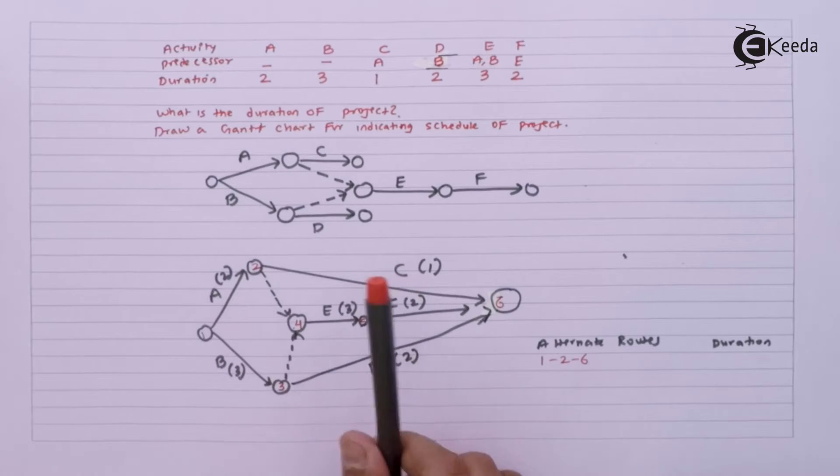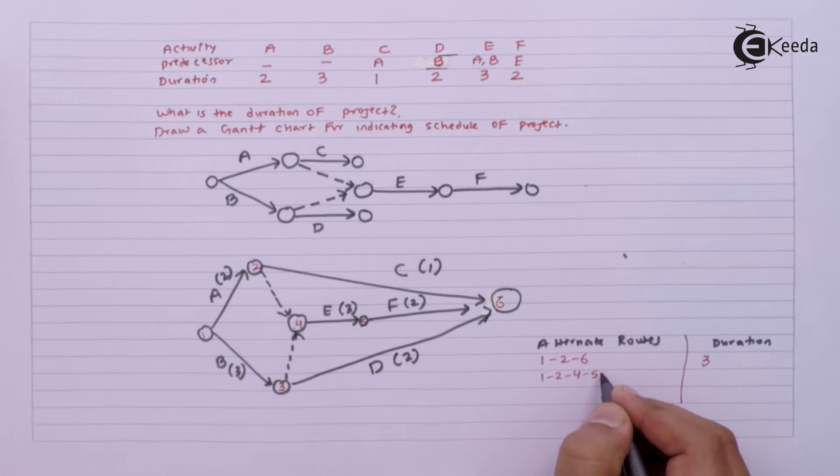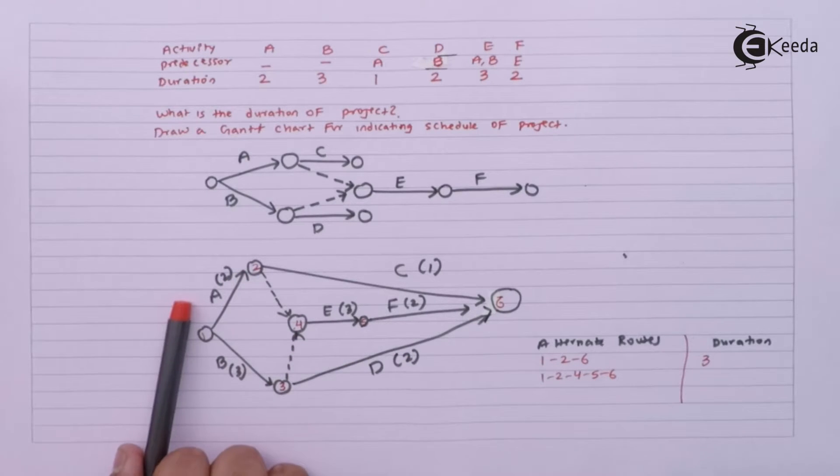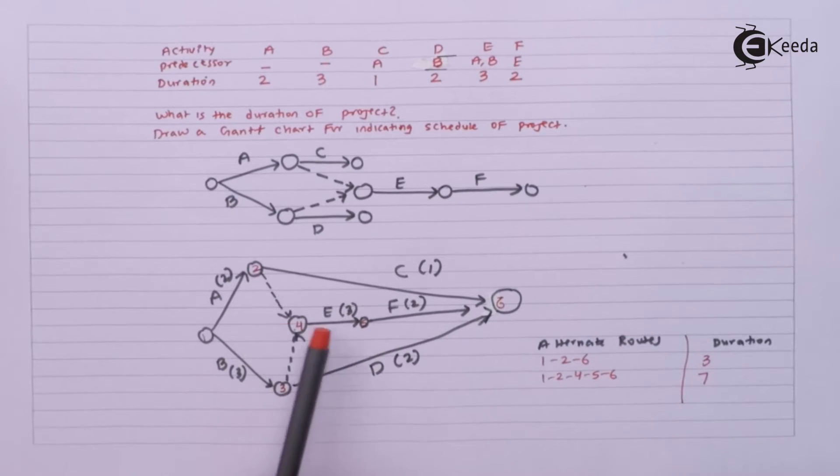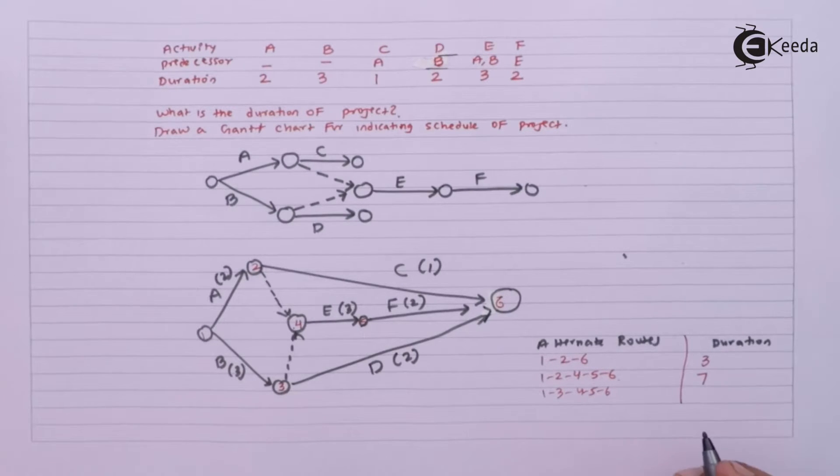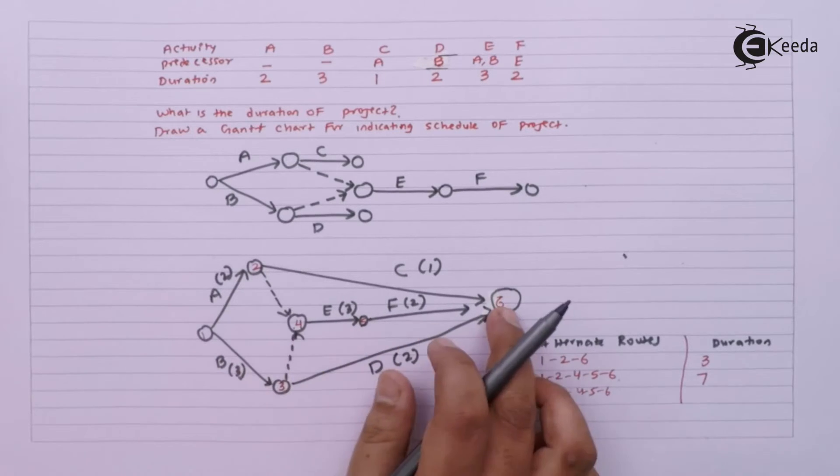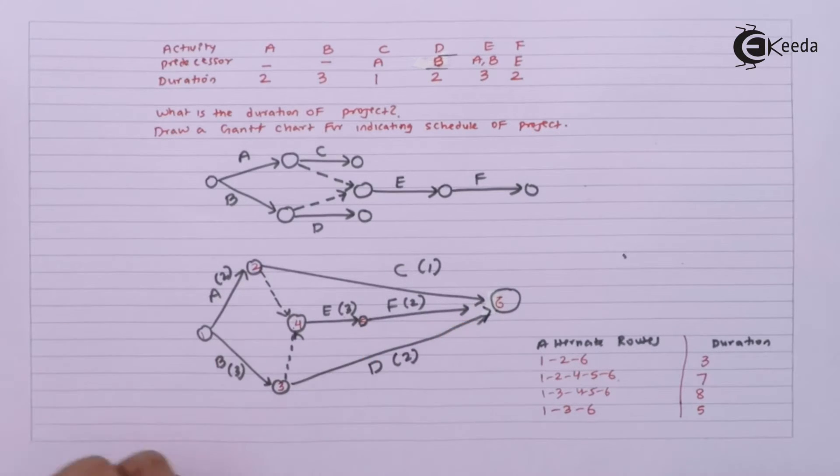My alternate routes will be: one-two-six which gives 2 plus 1 equals 3. Then one-two-four-five-six gives 2 plus 3 equals 5, plus 2 equals 7. One-three-four-five-six: 3 plus 3 equals 6, plus 2 equals 8. And last we have one-three-six which gives 3 plus 2 equals 5. So one-three-four-five-six with duration 8 becomes your critical path.